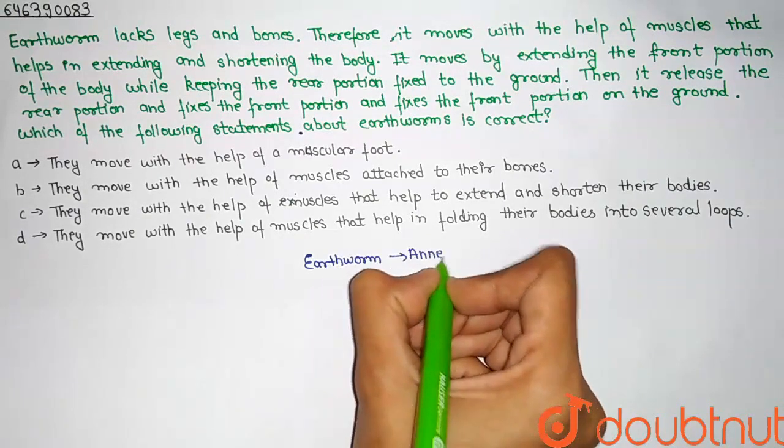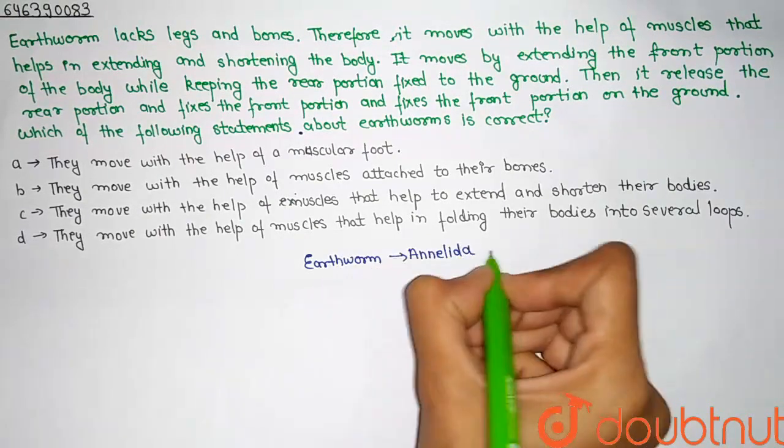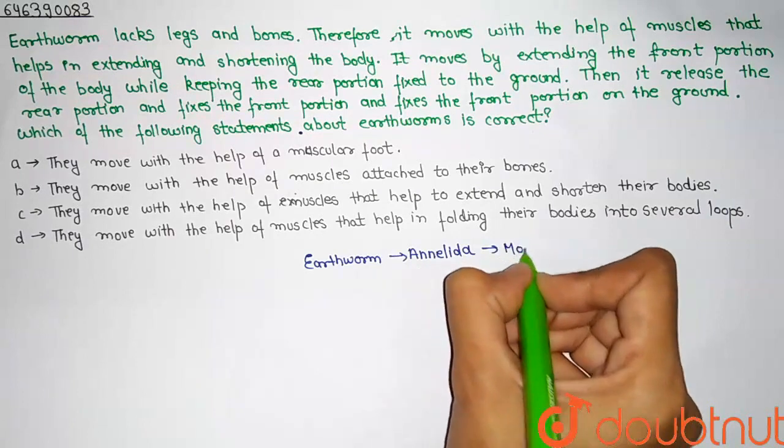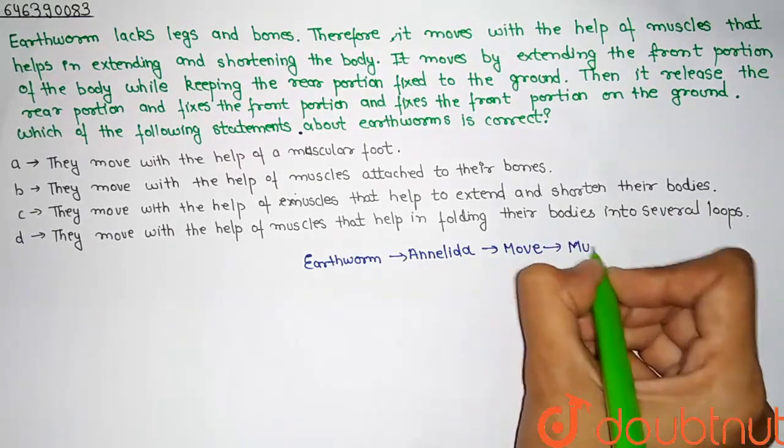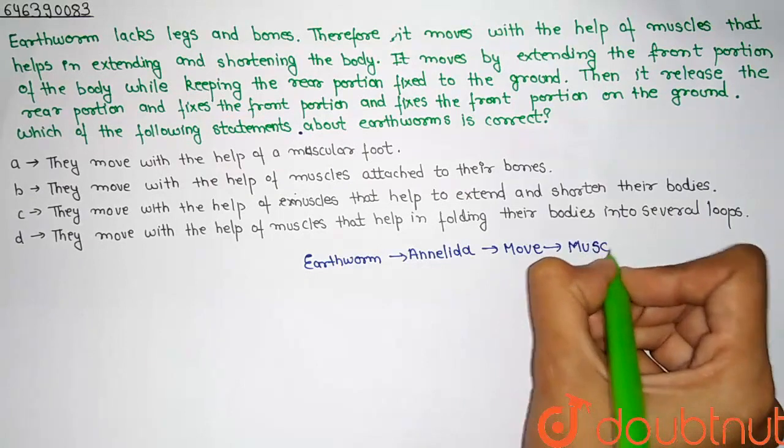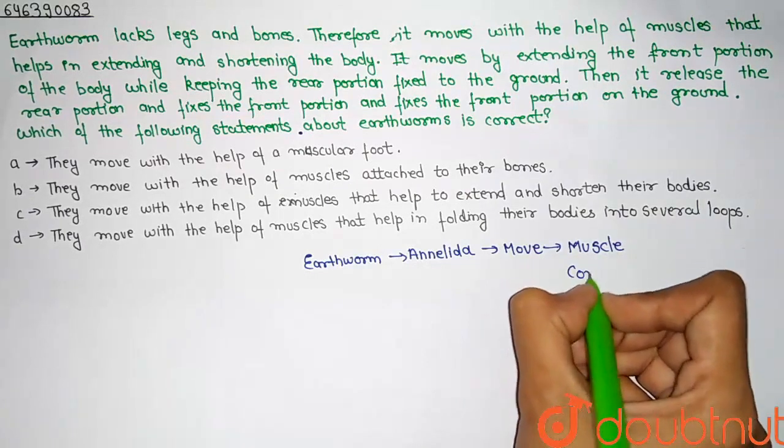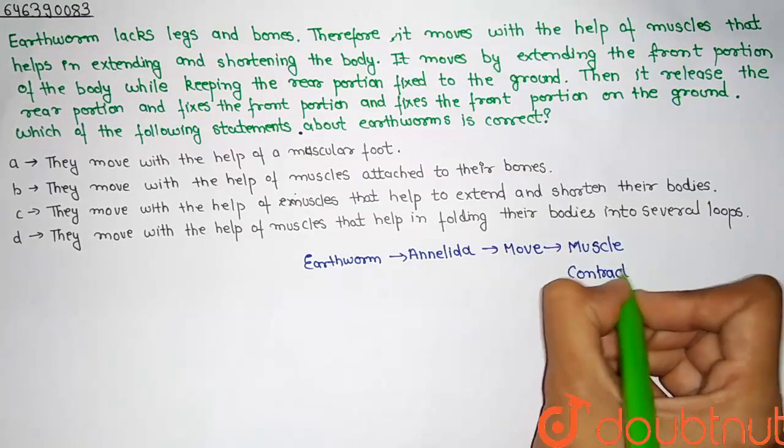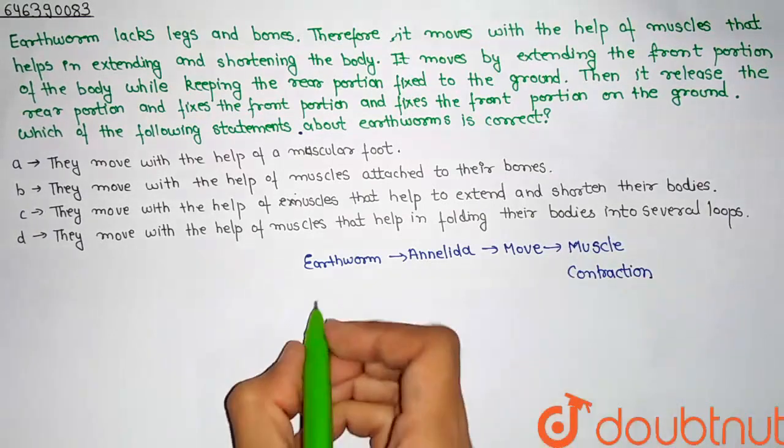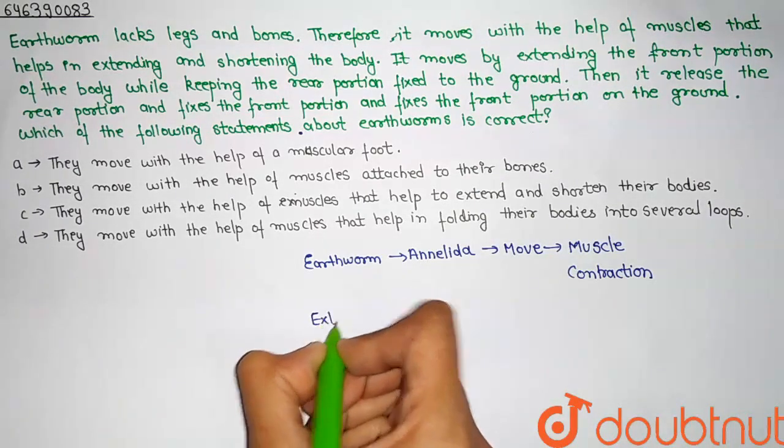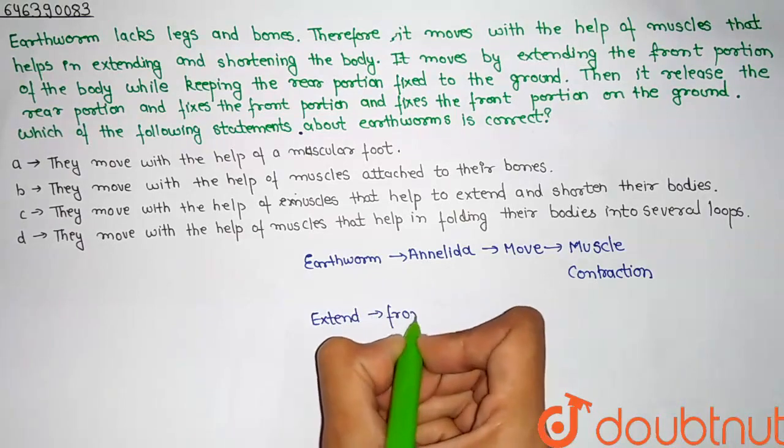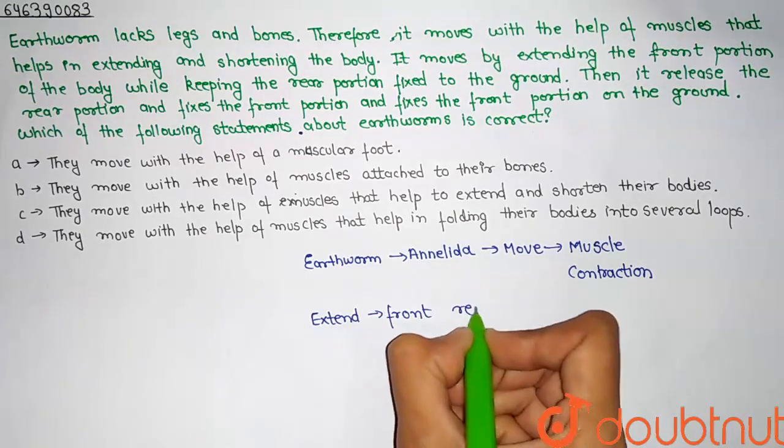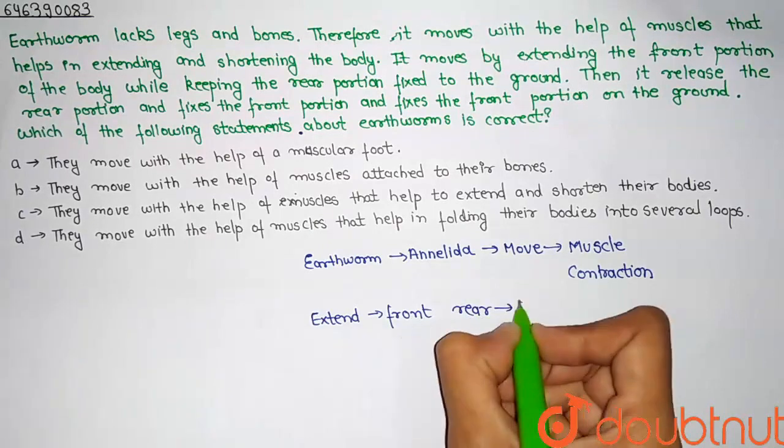If you talk about how it moves, then there are no legs or bones. It moves with the help of muscles - muscle contraction. Basically, the earthworm first will extend. Which part? The front part. The rear portion, the backward portion is fixed on the ground.